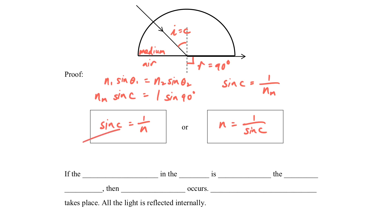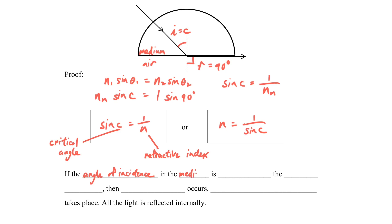What are C and N? C is the critical angle of the medium, and N is the refractive index of the medium. Different media will have different refractive indices, so they will also have different critical angles.